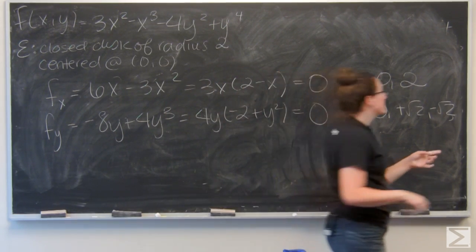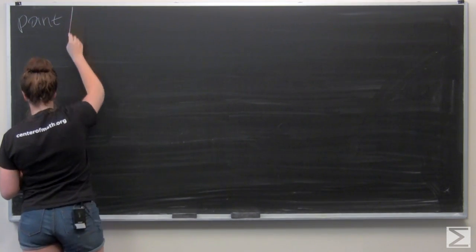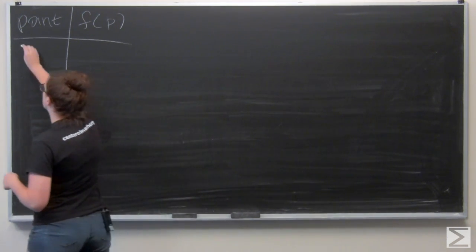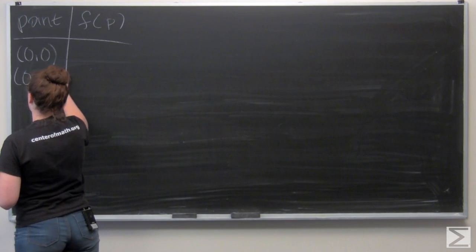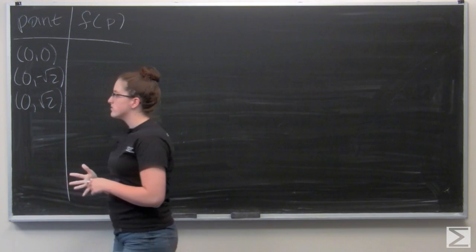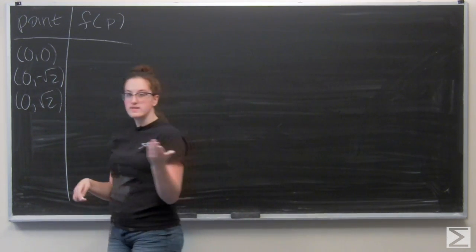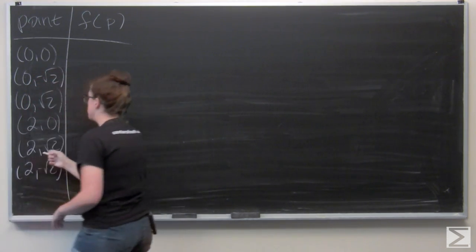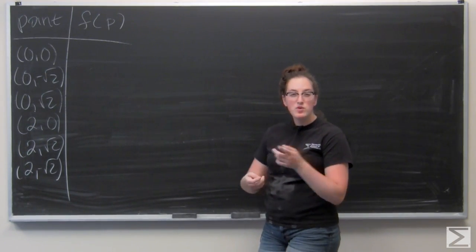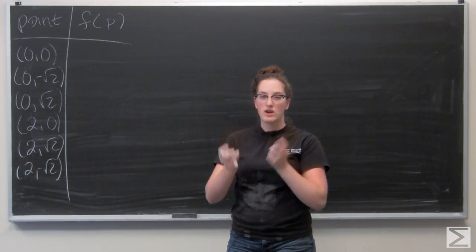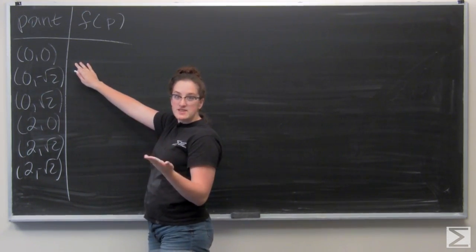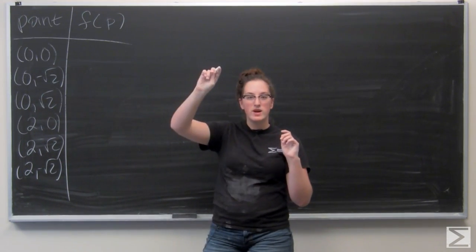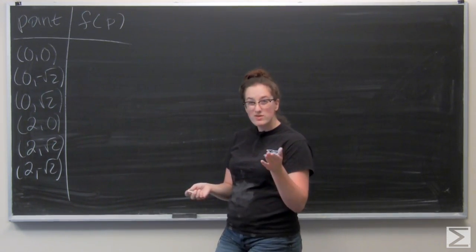Starting the list of points: (0, 0), (0, negative root 2), and (0, positive root 2). Then likewise for x equals 2: (2, root 2) and (2, negative root 2). We want to make sure all of these points are actually in our circle E or on its boundary. The origin is fine — that's the center. The points with x = 0 are good. The point (2, 0) lies on the boundary, so we're fine. But the two points with x = 2 and y = ±√2 are actually outside the circle, so I don't need to check those.